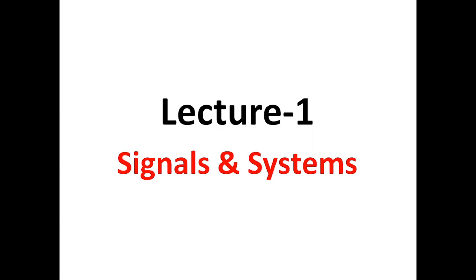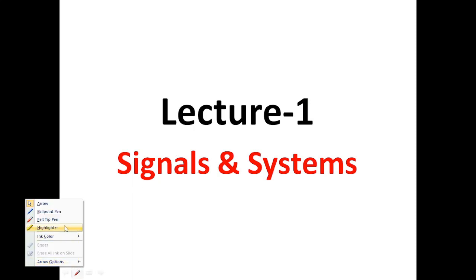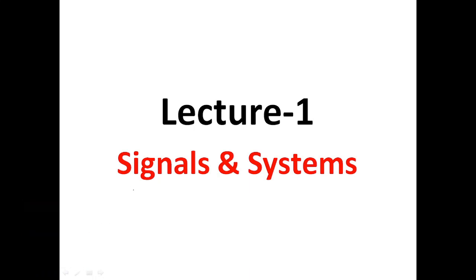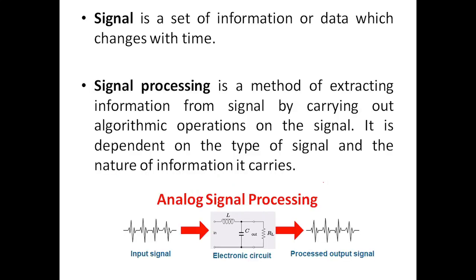Now the next topic is signals and systems. A signal, as we already discussed, is basically a set of information which varies with respect to time. Coming to signal processing — when we perform some algorithmic operations on a signal to get meaningful information which is hidden within the signal, that series of algorithmic operations is regarded as signal processing.